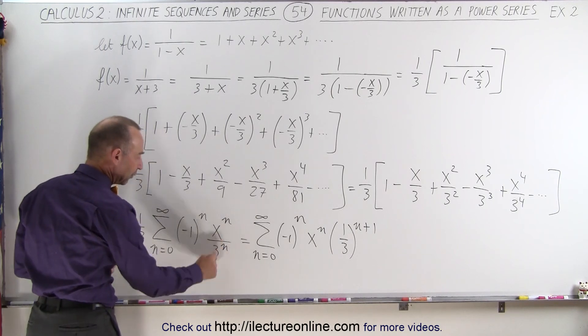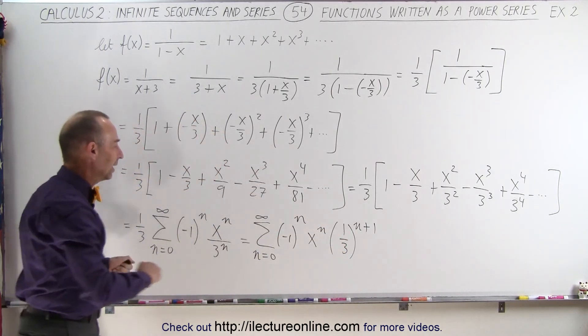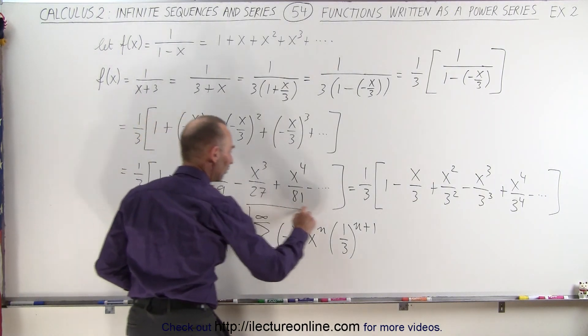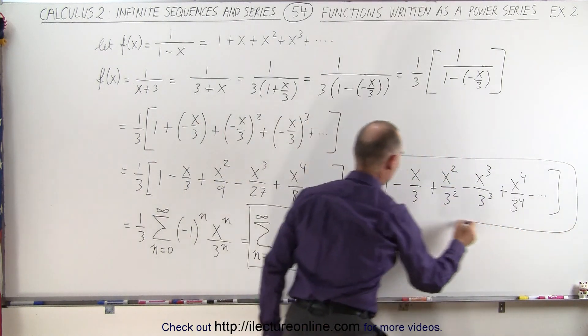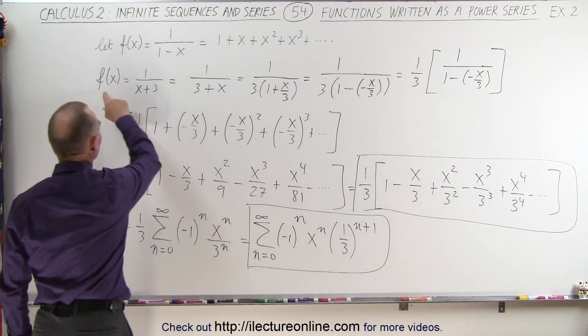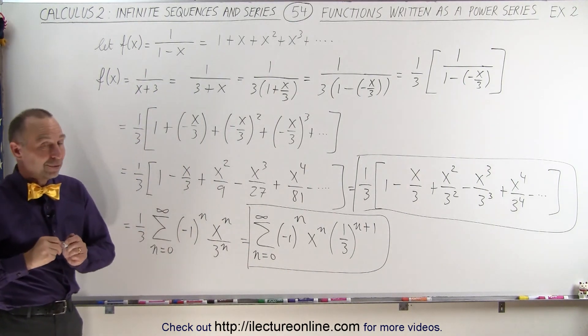When we multiply this, we get 1 over 3 to the n plus 1, which is what we have over there. And this is the infinite sum, of course, it could also be written as this, of that original function, where f of x equals 1 over x plus 3. And that's how it's done.